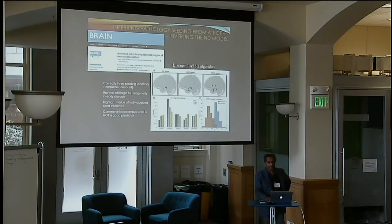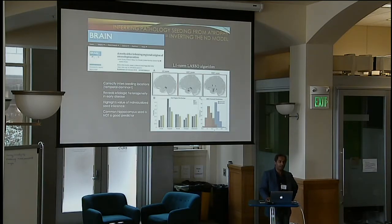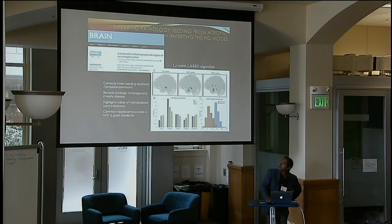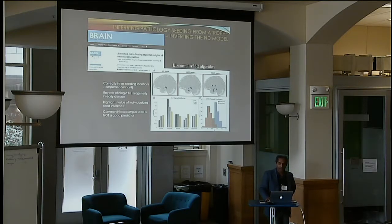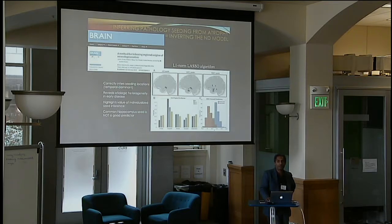Just to give an example of what first-principles models buy you — you can turn the network diffusion model backwards and try to infer where the disease may have started. We published a paper in BRAIN this year showing that from the atrophy patterns at patients' baselines, we're able to go back in time and figure out where the disease comes from. This can have clinical relevance because knowing where the disease originated tells the neurologist something they did not know just by looking at the baseline pattern.